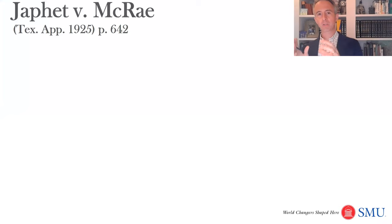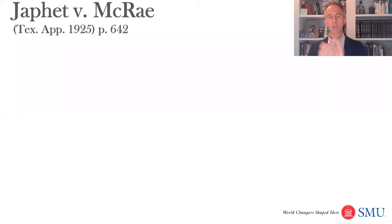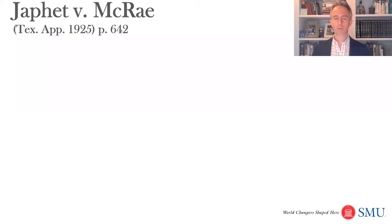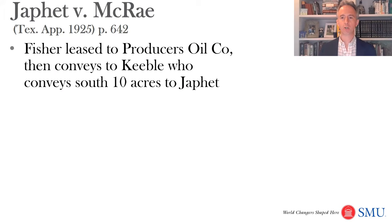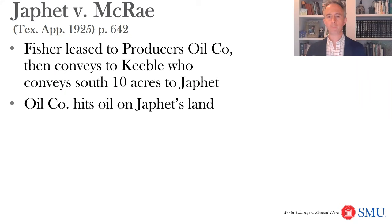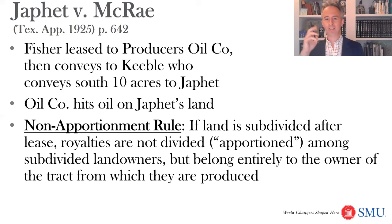Is the oil and gas that you produced shared with the two separate owners? Or does it just go to the owner of the portion of the land where the oil is produced? The key case here is Jaffet versus McRae from 1925, on page 642 in your book. Fisher leased to Producers Oil Company, then conveys to Keeble, who conveys just the south 10 acres to Jaffet. The oil company hits oil on Jaffet's land, and this is where the non-apportionment rule is established.